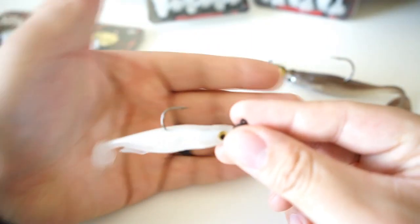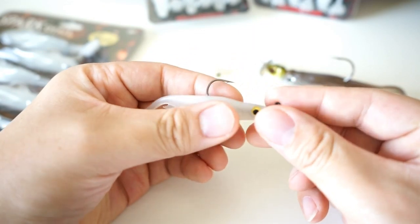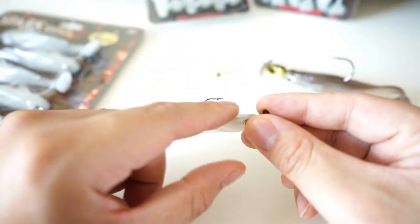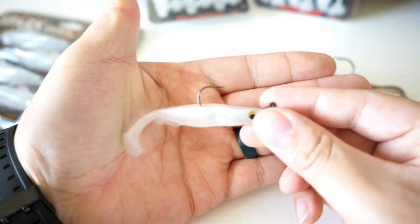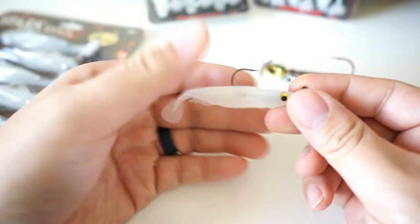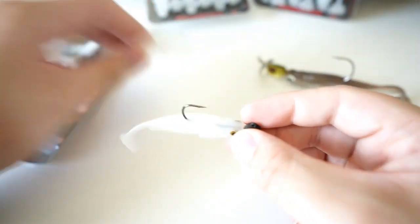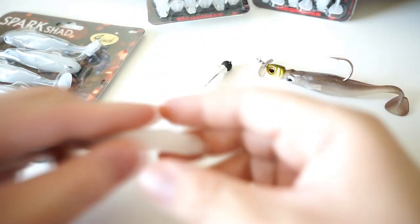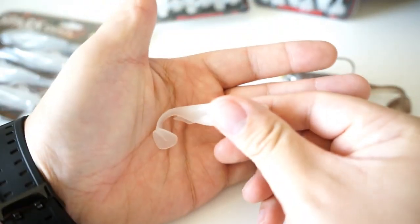Usually a rounded swimbait, kind of like your Keitech and things like that, they're rounded out so there's a little more plastic at the top. With the Spark Shad itself, you eliminate that plastic and you get a little bit more room for a better hookup ratio.